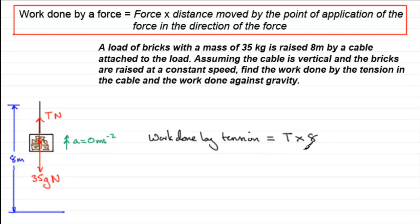The problem is we don't have T. We could have seen that coming, to be honest. But we can find out T very easily because we know it's going at a constant speed. So if we were to resolve upwards, then T minus 35g, the resultant force upwards, must be equal to 0 because it's going at a constant speed.